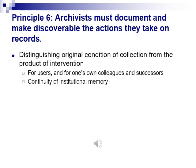Principle six identifies another angle for transparency, in this case regarding interventions by the archivist that distinguish the original condition of the collection from subsequent interventions. This information is essential for the context of the collection as the user finds it, and also for one's own present and future colleagues, providing continuity of institutional memory as well as transparency in actions taken.